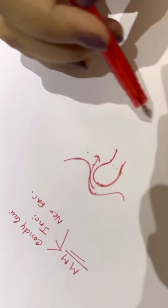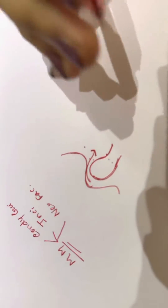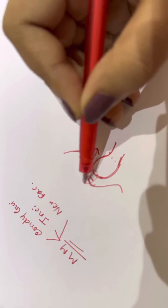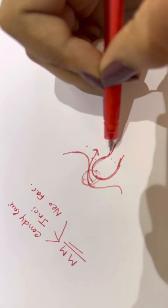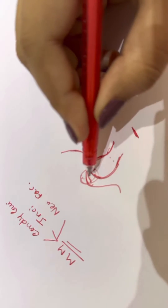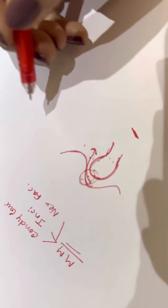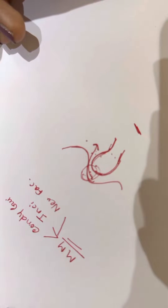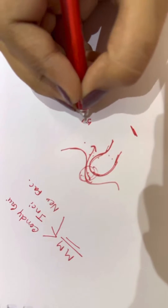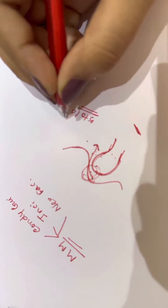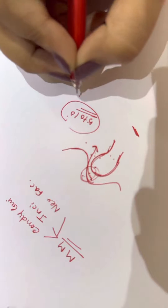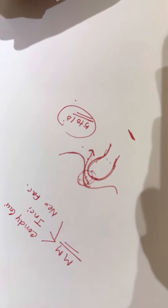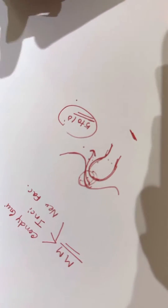When viewed from the undersurface, the articular eminence is thicker in the medial portion. Thus, the condylar movement is steeper in the medial trussive pathway than in the straight protrusive pathway. The difference between them is known as the Fischer's angle, which ranges from 5 to 10 degrees. That is, the condylar guidance during the lateral trussive will be 5 to 10 degrees greater than that of the condylar guidance during the straight protrusive.